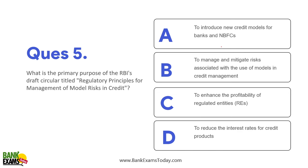What is the primary purpose of RBI's draft circular? It is a draft circular — the regulatory principles for management of model risk in credit. As the name suggests, its purpose is to manage and mitigate risk associated with the use of models in credit management.